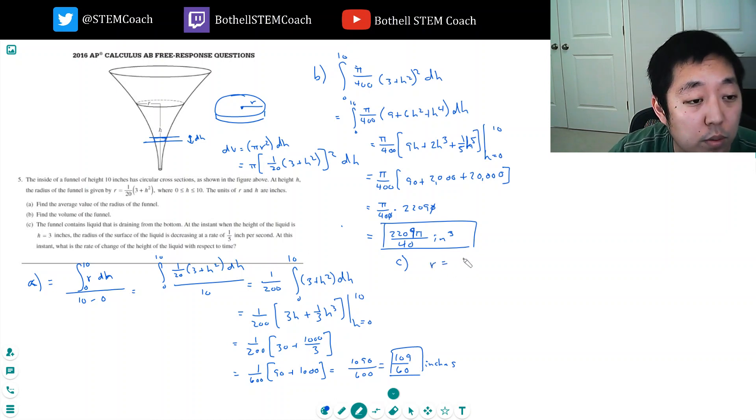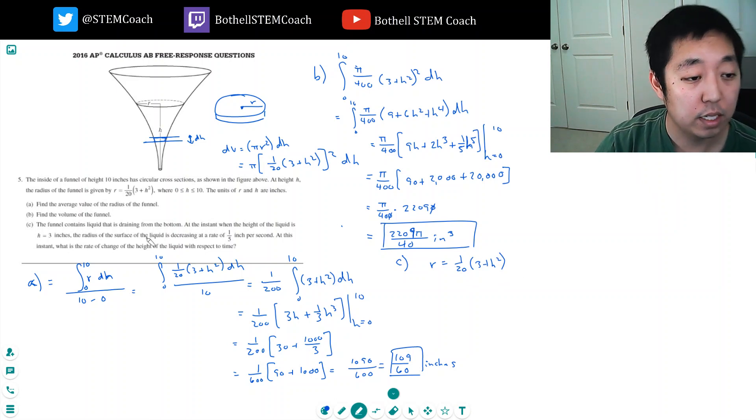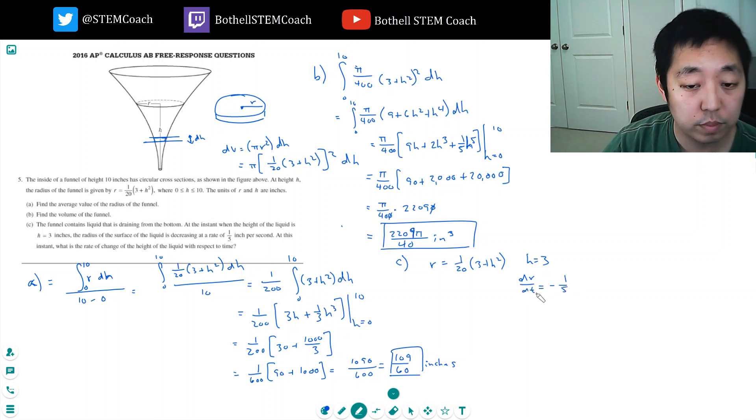R equals 1/20th (3 plus h squared). This is the equation I have. They've given me that at h equals 3 inches, dr/dt is equal to minus 1/5. Okay. That's what the radius of the surface. And they want to know... they're asking me what dh/dt is.